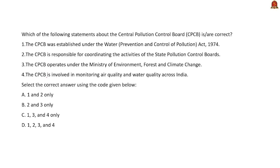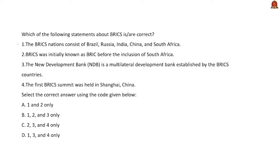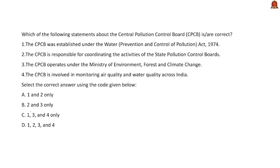Question 2 — about BRICS: Statement 1 — BRICS consists of Brazil, Russia, India, China, and South Africa — correct. Statement 2 — BRICS was initially known as BRIC before South Africa's inclusion — correct. Statement 3 — the New Development Bank is a multilateral development bank established by BRICS — correct. Statement 4 — the first BRIC summit was held in Shanghai — incorrect; it was held in Russia. The correct answer is option B — statements 1, 2, and 3 only.